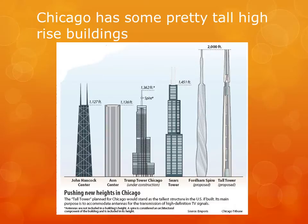Chicago has some pretty tall buildings, including John Hancock Center, Aon Center, Trump Tower, the Sears Tower — which is now called Willis Tower — and a couple that were proposed but not yet built: Fordham Spire and Tall Tower. Fordham Spire right now is just a hole in the ground because the financing fell through a few years ago, and we are yet to see what will happen with that.